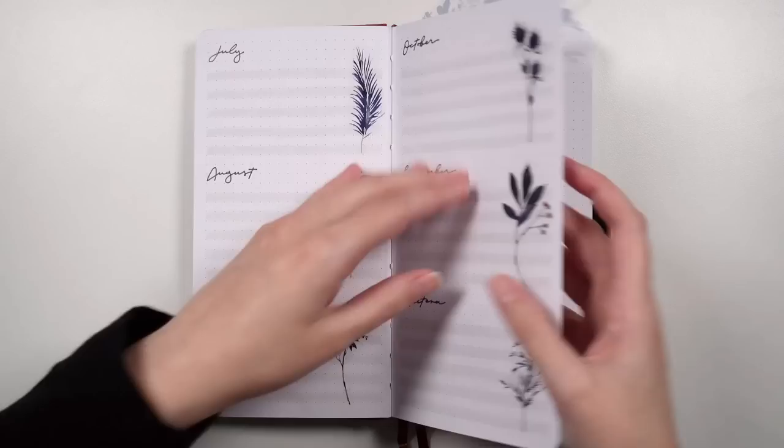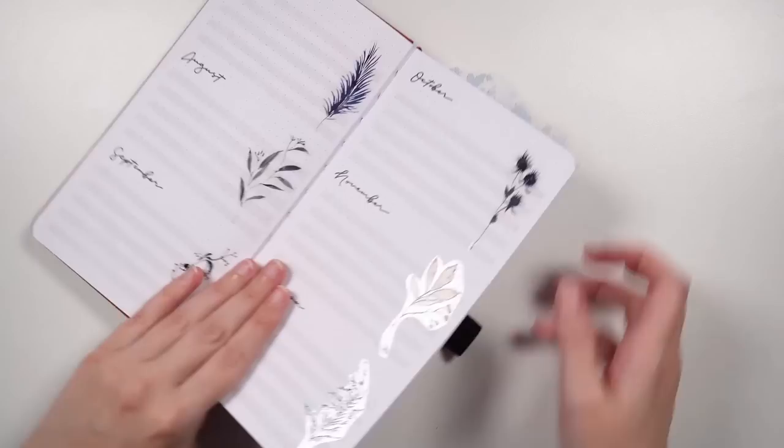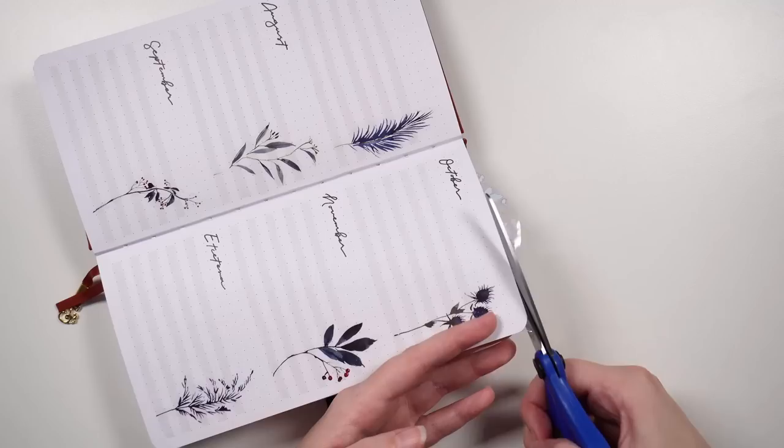You'll have seen it at the start of the video, but the notebook that I'm going with is a kind of burnt orange color. This one comes from Archer and Olive, and I specifically picked this notebook because it was not blue. My last four journals that I've set up have been blue, so I don't want any more blue journals. I wanted to go with something different.